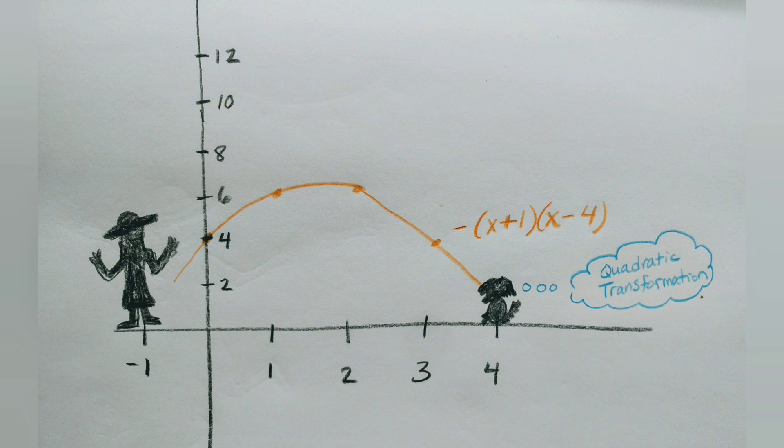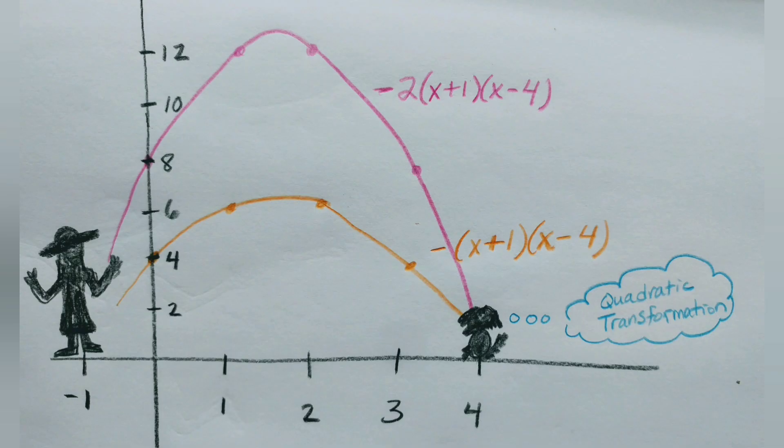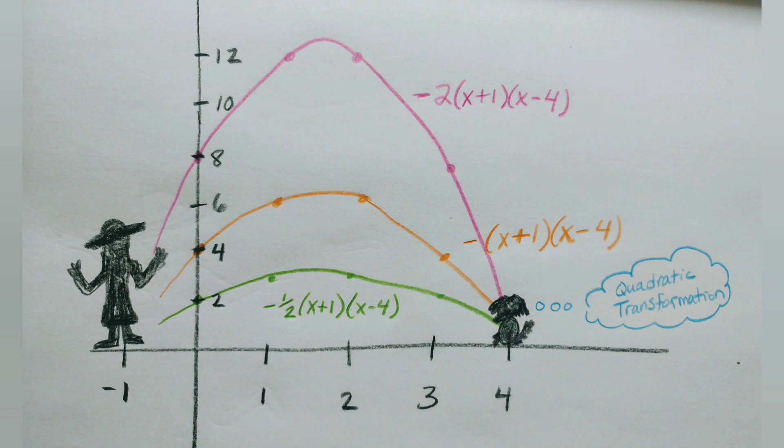What if the treat was thrown higher and in a skinnier arc? She thought back to when she learned about quadratic transformations. To make a parabola skinnier, she used a coefficient less than negative one. To make it fatter, she used a fractional coefficient. In the end, both dogs got a treat for being smart.